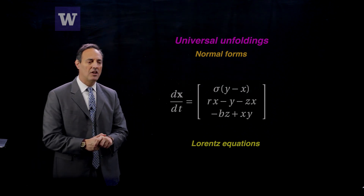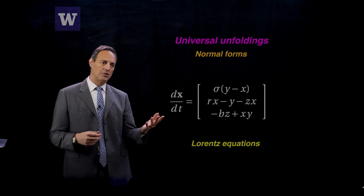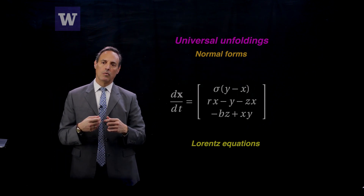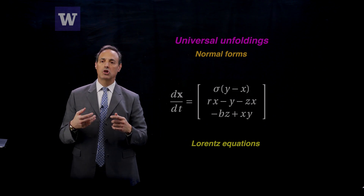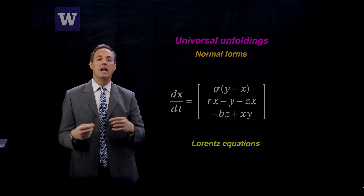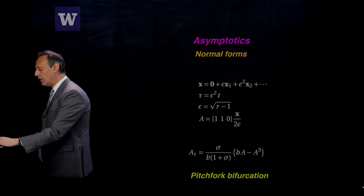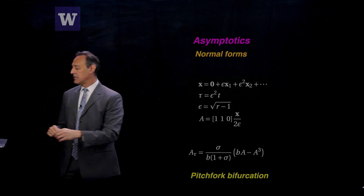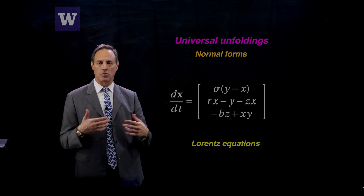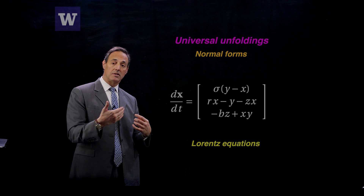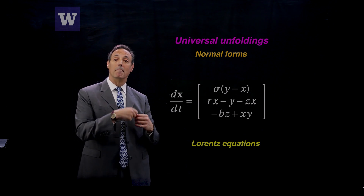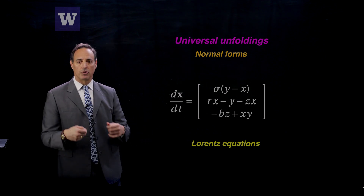Let's do another example — the Lorenz equations. This is a nonlinear system that produces very interesting behaviors of chaotic dynamics. Before that happens, there's a parameter we vary — R (rho). Initially, the origin is stable, and once R gets above a certain value, it goes unstable. The question is, what kind of instability is that? R is the fundamental bifurcation parameter. For R less than some critical value, the origin is stable and it's the only fixed point. For R above the critical value, you get multiple solution branches and the origin becomes unstable.